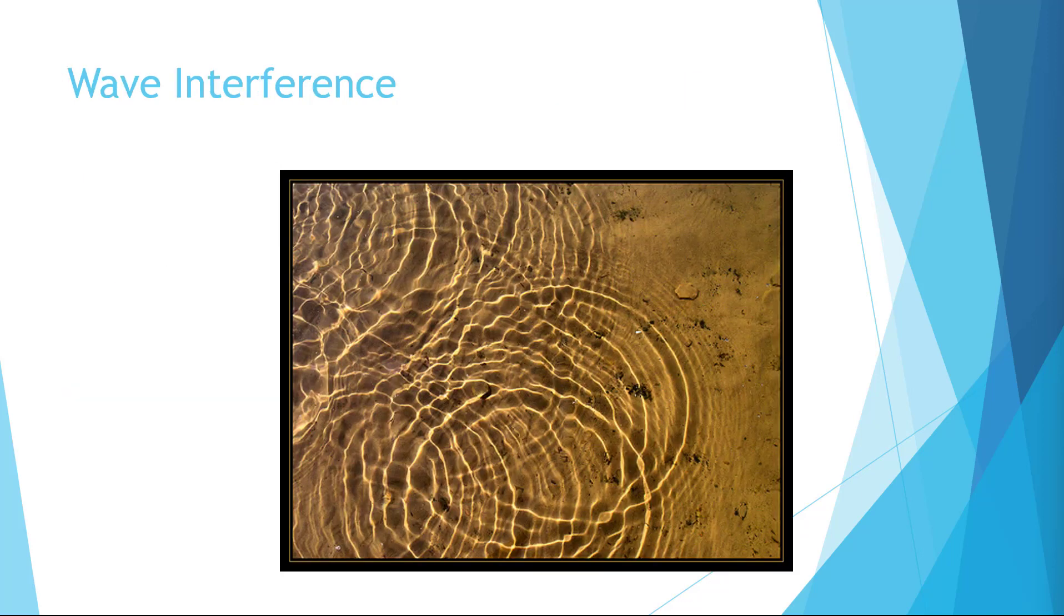It's important to first remember what wave interference is, as this is how molecular orbitals are made. We can use our experience with water waves to help picture this. If two waves interact with each other, in some places they will add together, forming constructive interference, and in other places they will cancel out, forming destructive interference.